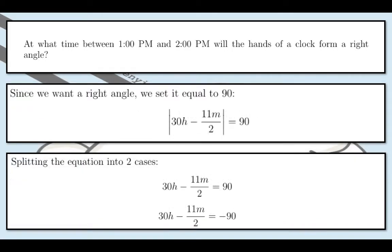Now we split the equation into two cases. That's how you solve absolute values. So we know that whatever is inside the absolute value should be equal to 90 or negative 90. Since the absolute value of 90 is 90 and the absolute value of negative 90 is also 90.